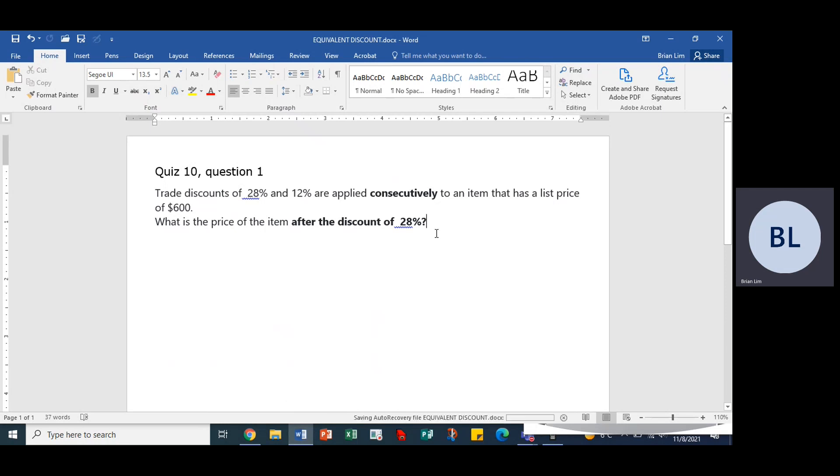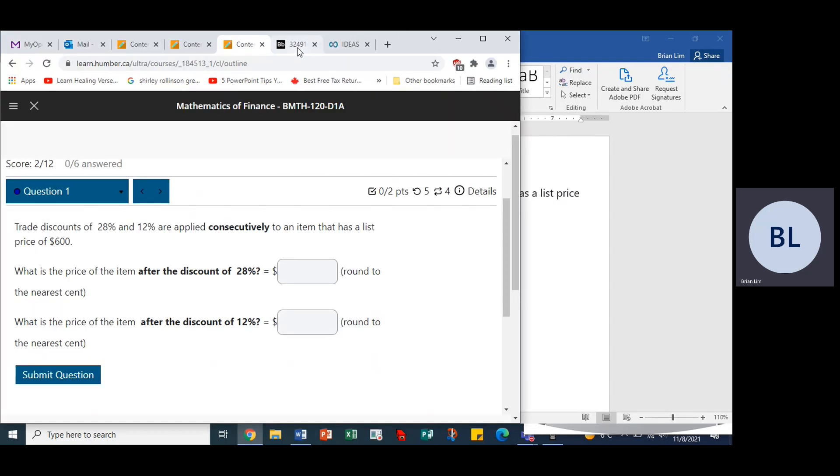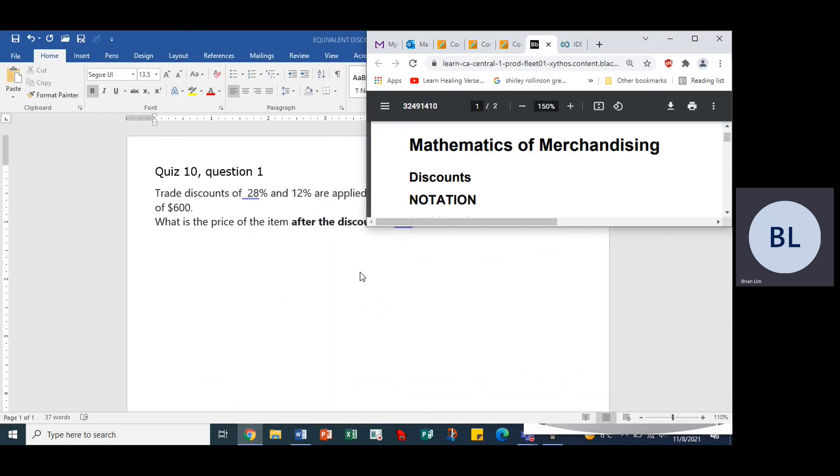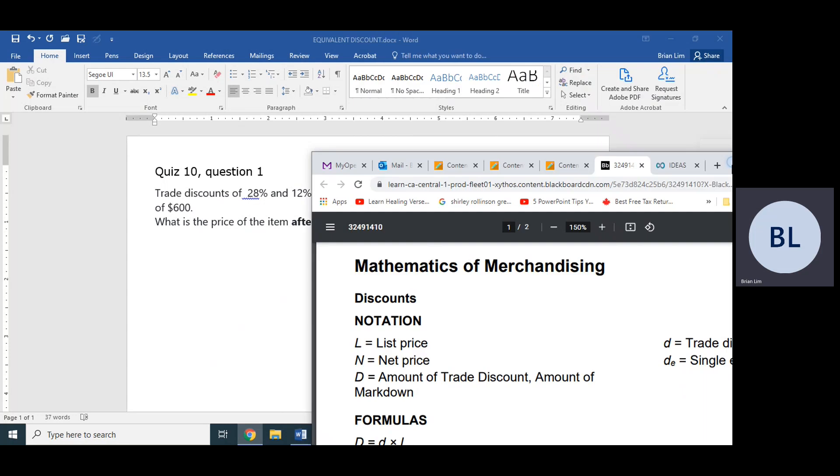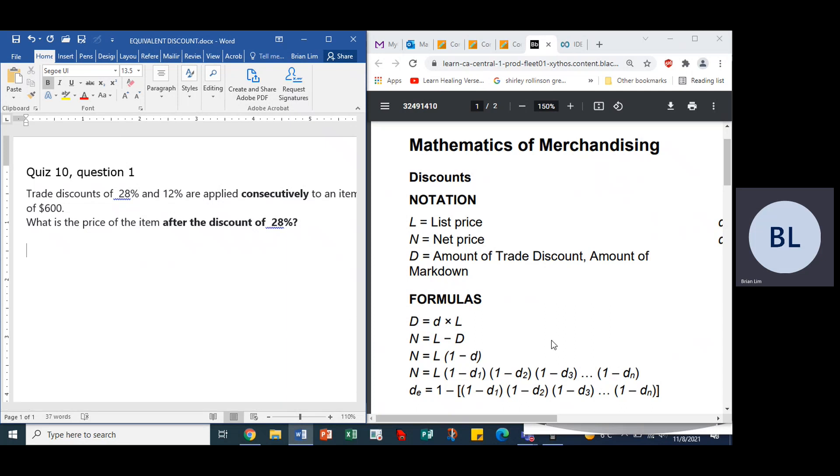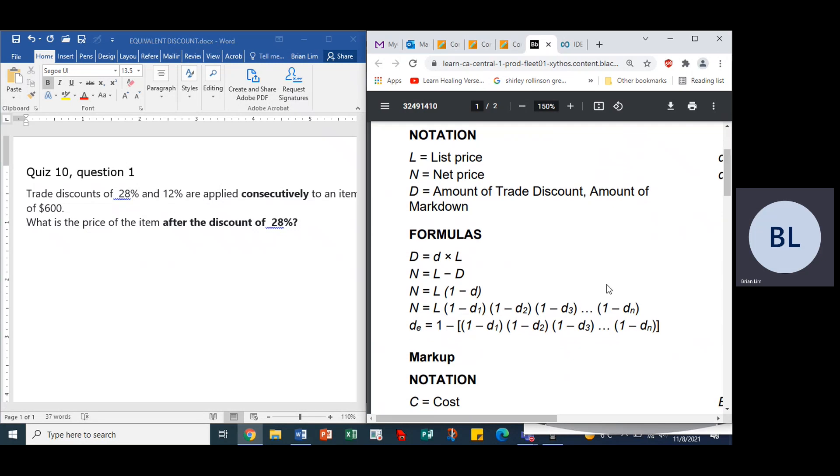So what is the price of the item after the 28% discount? Let us go to our formula sheet here. Maybe it would do us better if we have both in view, so let's do that. We have a discount and we want to find the price. The net price would indeed be the price after the discount, so we can use this formula.